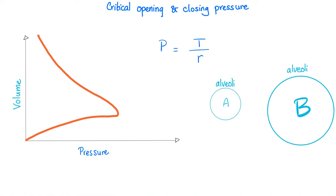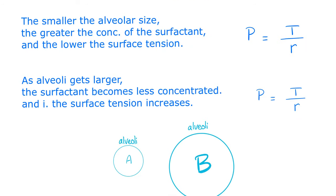Critical opening and closing pressure: in the beginning, it's very hard to inflate a balloon — you need huge distending pressure as you increase the volume, until you reach a sweet spot where it gets easier. At that point the relationship between volume and pressure becomes inverse (Laplace's law) — the radius is increasing, so distending pressure decreases. As the alveolus gets larger, surfactant becomes diluted and surface tension increases.